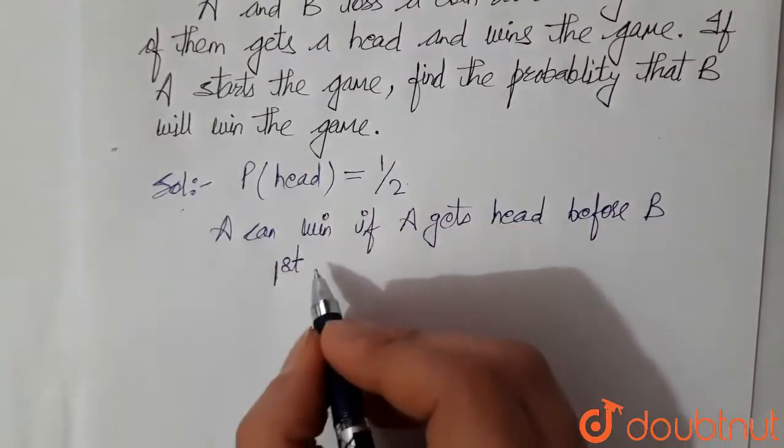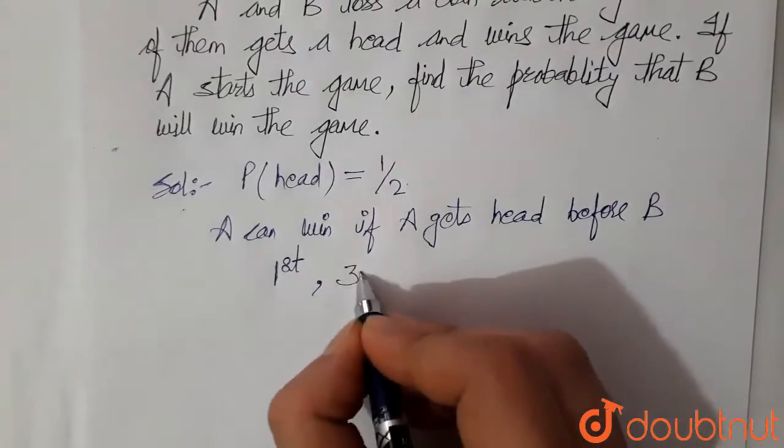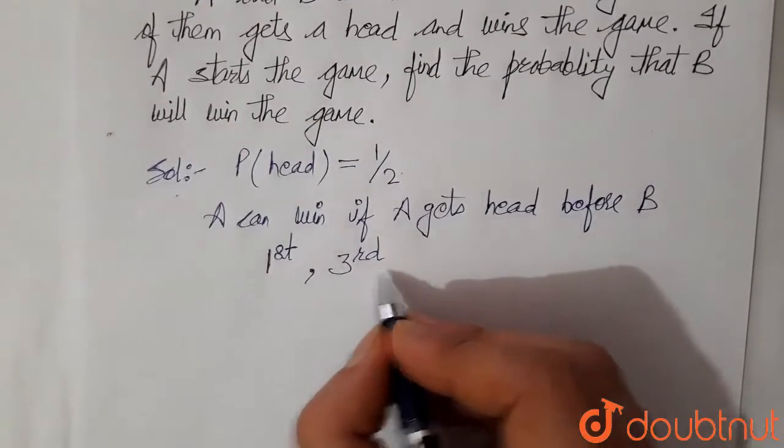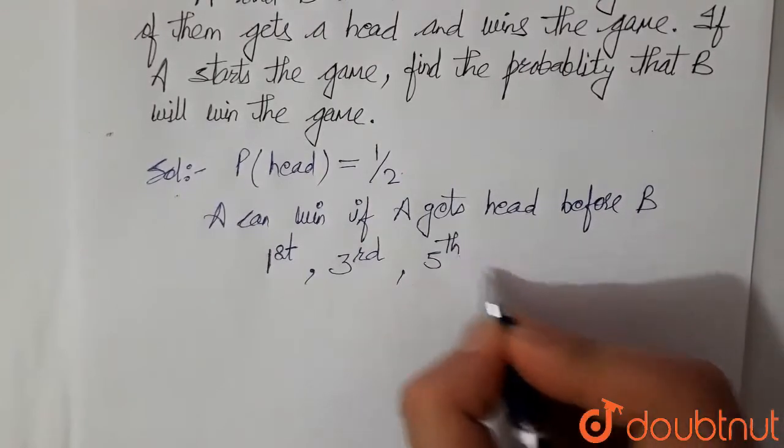And if he didn't get head in the first try, then the third toss of the coin, he can get head, similarly fifth, and so on.